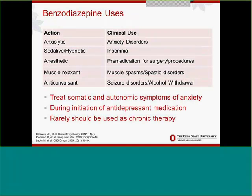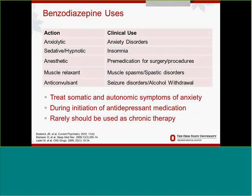When we think about benzodiazepine uses, the most common place we see them in primary care is for different anxiety disorders. They're very effective at decreasing somatic and autonomic symptoms of anxiety, but they don't do much for apprehension and worry, so they probably shouldn't be used first-line. They can be effective during the delay to treatment we see with antidepressants. We also see them used for insomnia — the American Academy of Sleep does recommend them for primary insomnia, but again short-term, not chronic. They're also used as anesthetics, muscle relaxants, anticonvulsants, and for alcohol withdrawal. The common theme is they really should be used short-term.